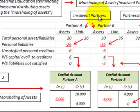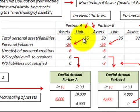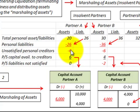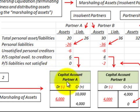Let's look at Partner A first. They have assets of $20,000 and liabilities of $26,000. The amounts owed to personal creditors of $26,000 must be subtracted from total assets of $20,000. So we have unsatisfied personal creditors of $6,000 — Partner A owes their personal creditors $6,000. Now we have to go to the capital account for Partner A to see what is available there.